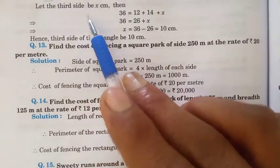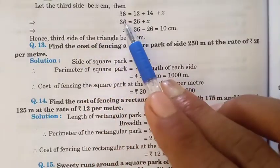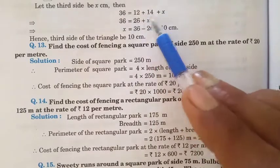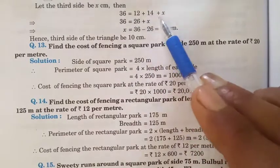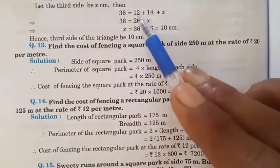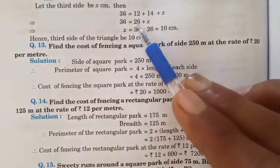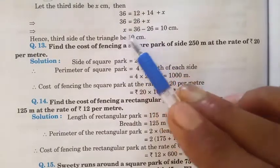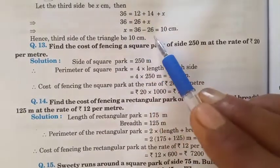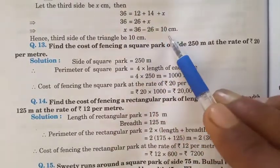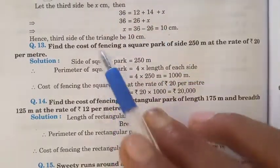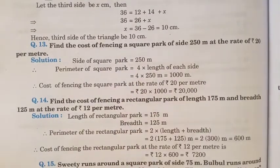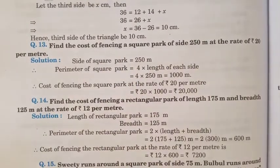Let the third side be x. So: 36 equals 12 plus 14 plus x. 12 and 14 is 26 plus x. Therefore x equals 36 minus 26 equals 10 cm. So the third side of the triangle is 10 cm.